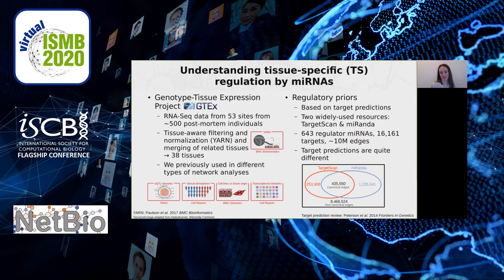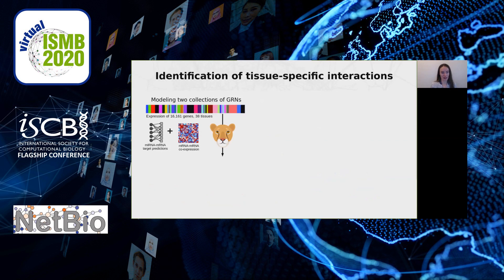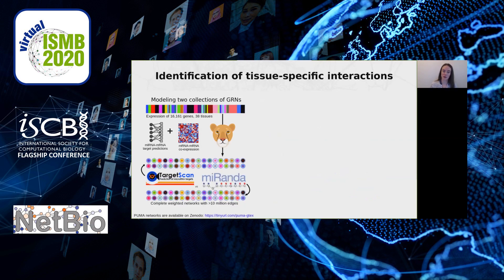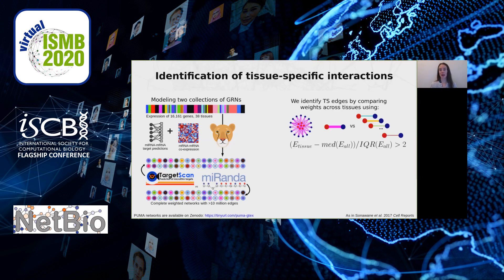As is widely known, target predictions between these two resources are actually very different. While there was an overlap of about 400,000 canonical edges — edges identified in both TargetScan and Miranda — there were edges only predicted in TargetScan and some only predicted by Miranda. We mainly wanted to model PUMA networks on both resources to see if we could still capture consistent tissue-specificity signals. We integrated gene expression data with microRNA and mRNA target predictions using PUMA, modeling 38 networks based on TargetScan and 38 based on Miranda. We then identified tissue-specific edges by comparing edge weights in one tissue to the edge weight across all tissues — the deviation from the median divided by the interquartile range. We call this a tissue-specificity score; if the score was larger than two, we called the edge tissue-specific. Importantly, edges can be specific to more than one tissue — we call this multiplicity.